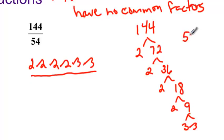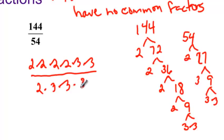On the bottom, if we take 54, that would be 2 times 27. And 27 would be 3 times 9. And 9 would be 3 times 3. So we have 2 times 3 times 3 times 3. We've done the prime factors.